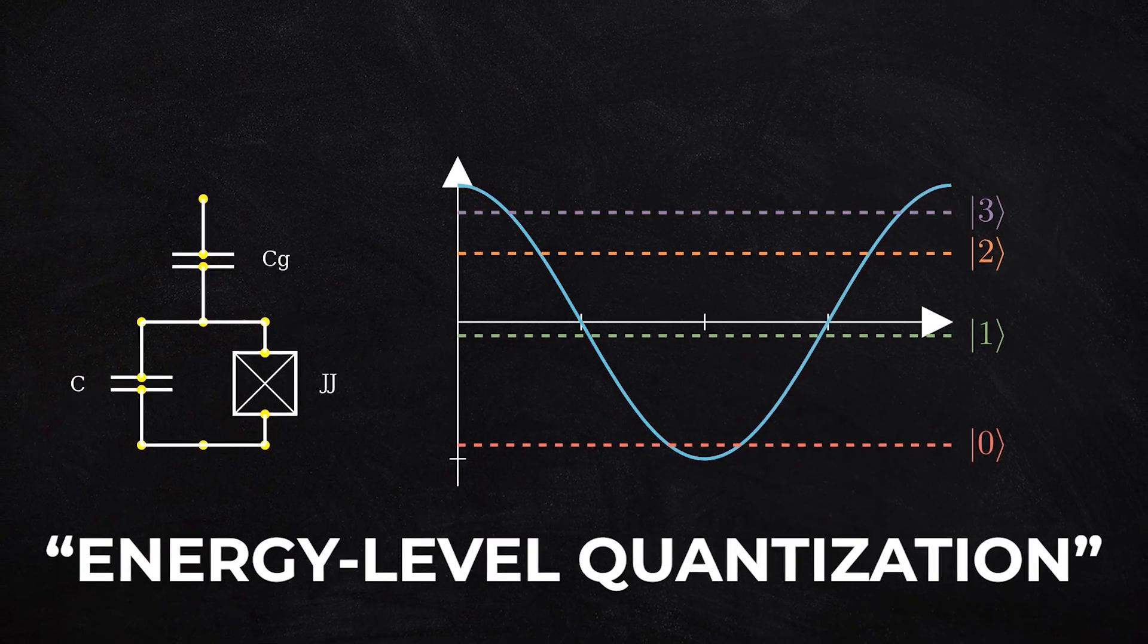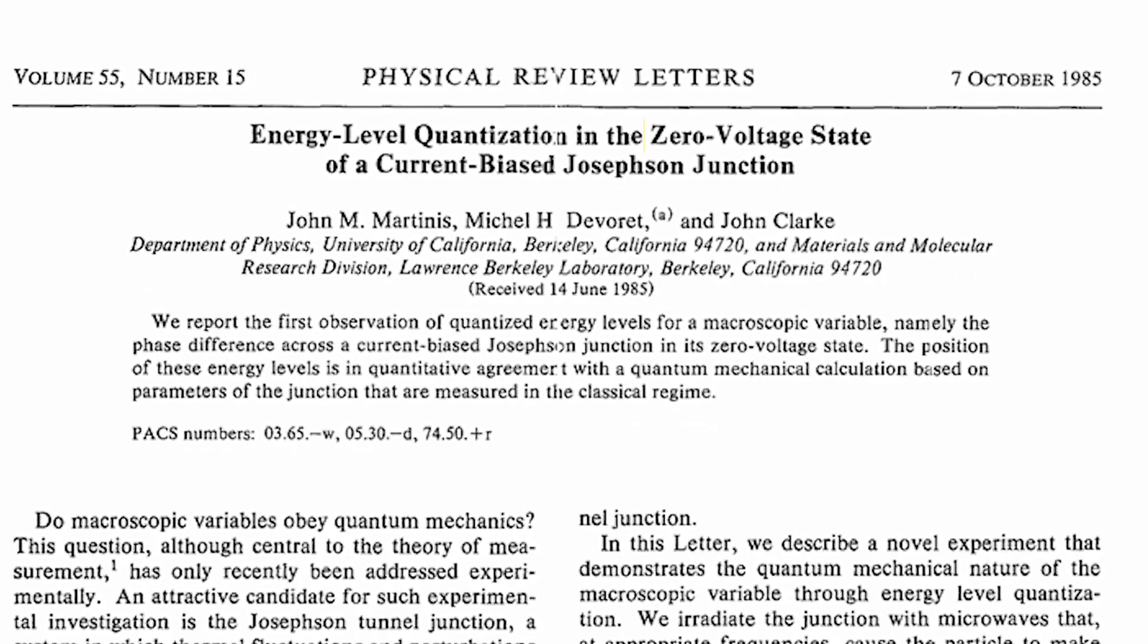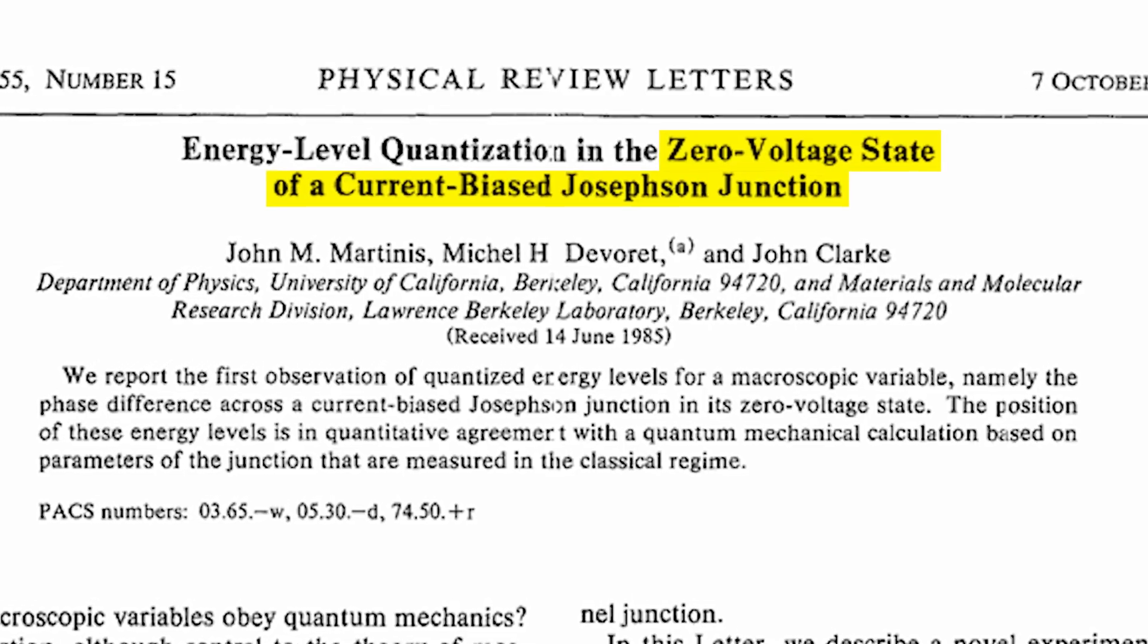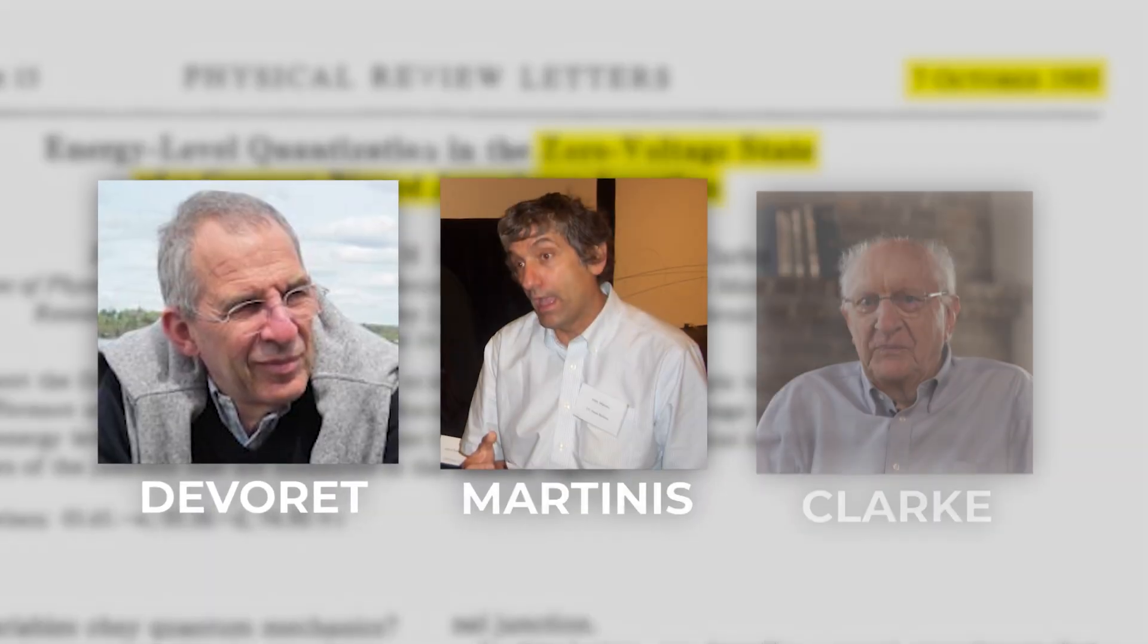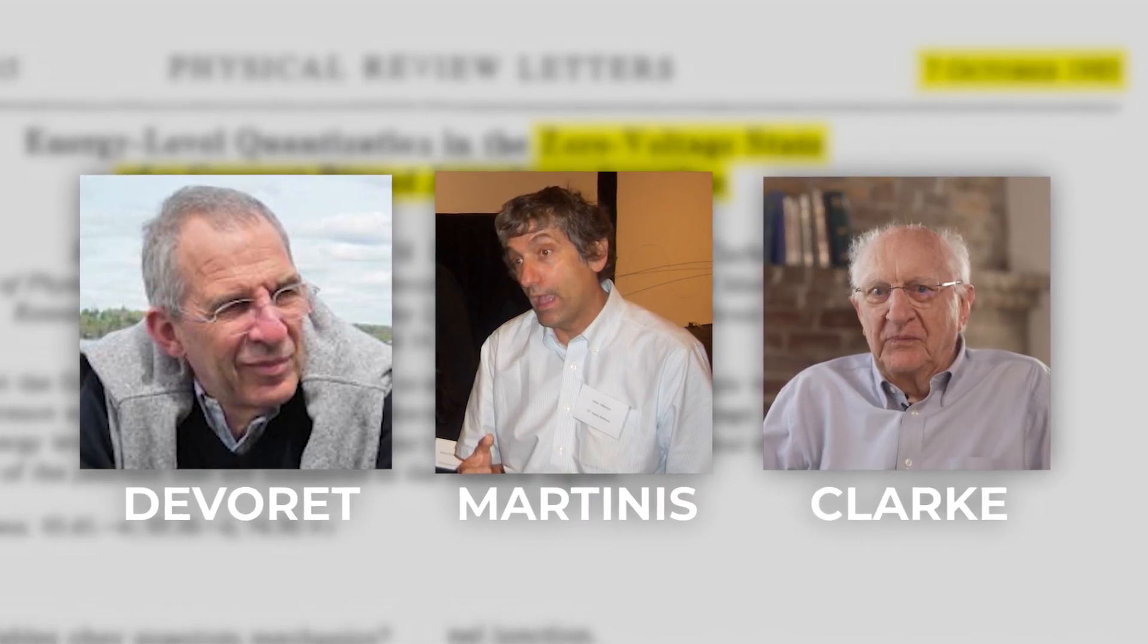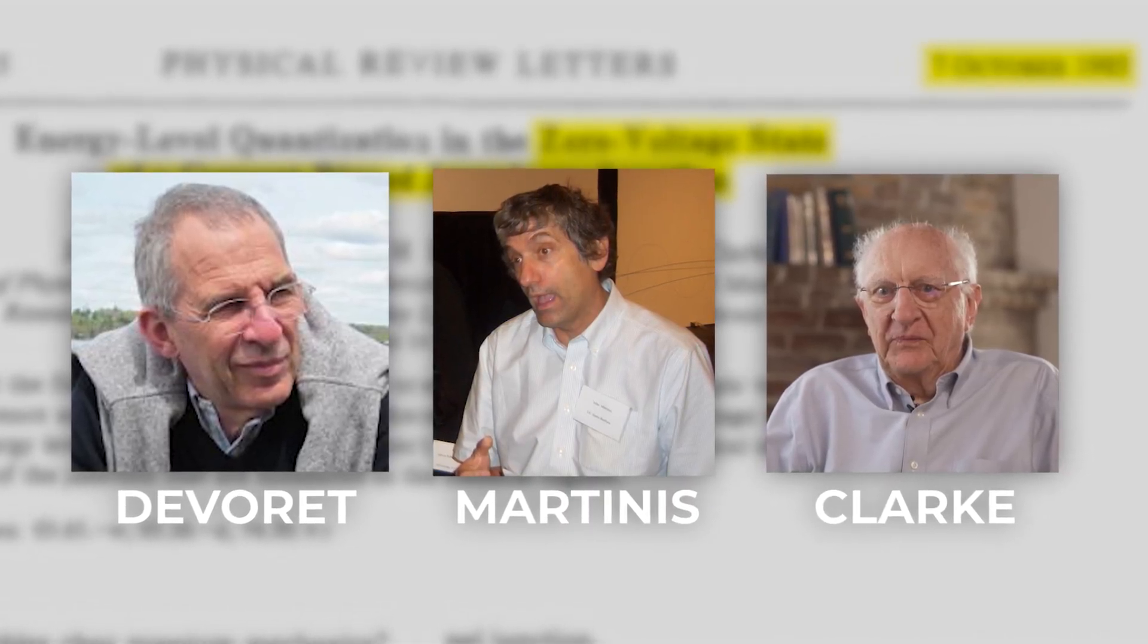The paper, titled Energy Level Quantization in the Zero Voltage State of a Current-Biased Josephson Junction, was published 40 years ago in 1985 by Michel Devoret, John Martinis, and John Clarke, three pioneers who have gone on to have rich careers in quantum computing.